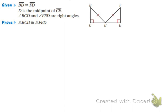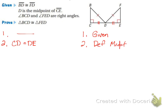For the second proof, we start with the given statements. In the second step, since BD and FD are equal and D is the midpoint of CE, we know that CD equals DE by the definition of midpoint. Then, since angles BCD and FED are stated to be right angles, we can say angle BCD equals angle FED by the definition of right angle.